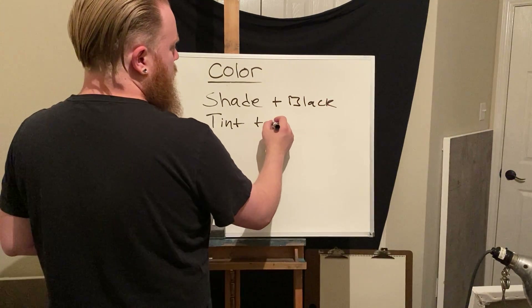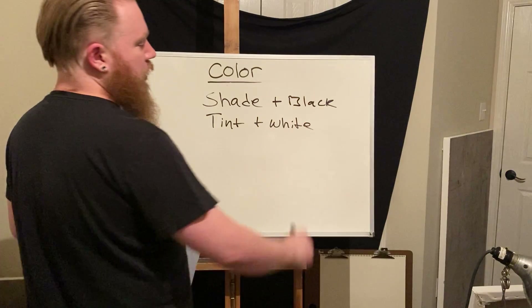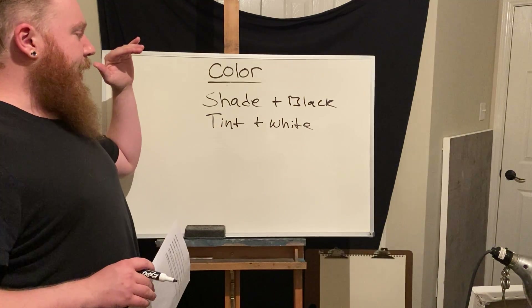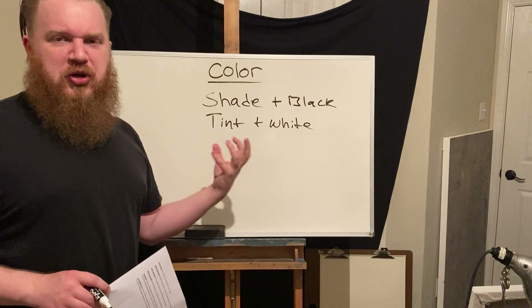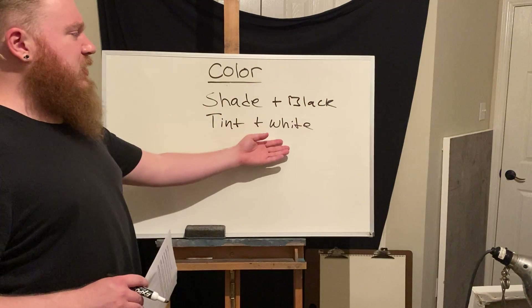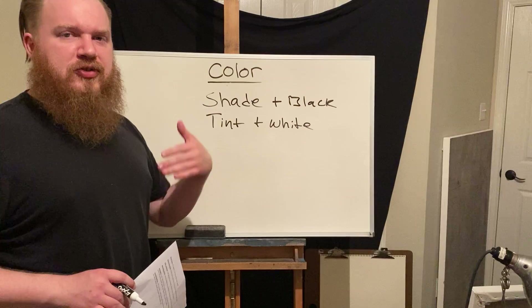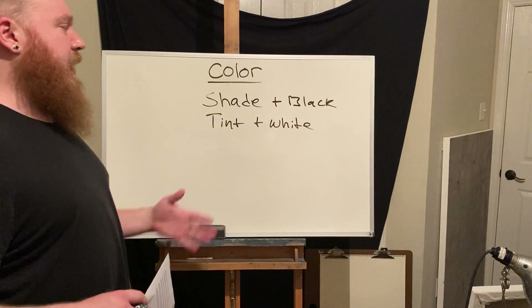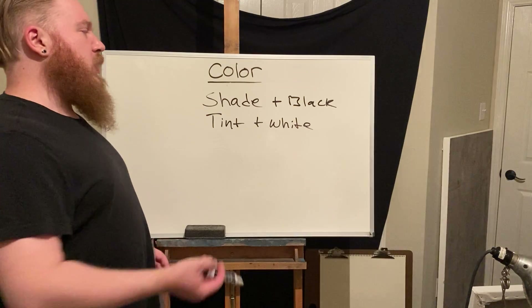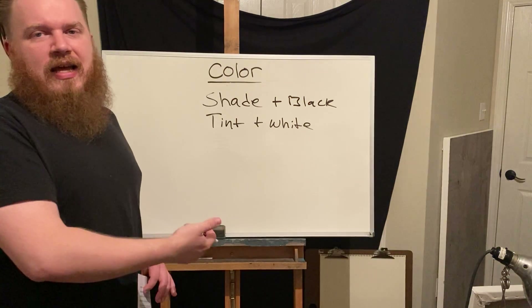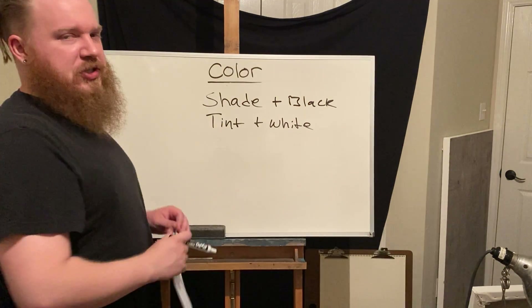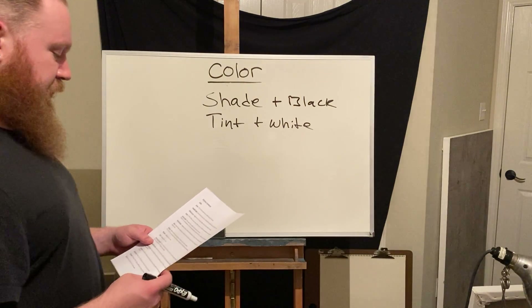Shade is adding black, but a tint is when we add white to a color. Anytime we add white to any color, we are tinting it. Taking primary yellow, red, or blue and adding white creates softer, more pastel-like transitions. We can view a tint and a shade of one single color as a relationship — a kind of transition from one extreme to the other.